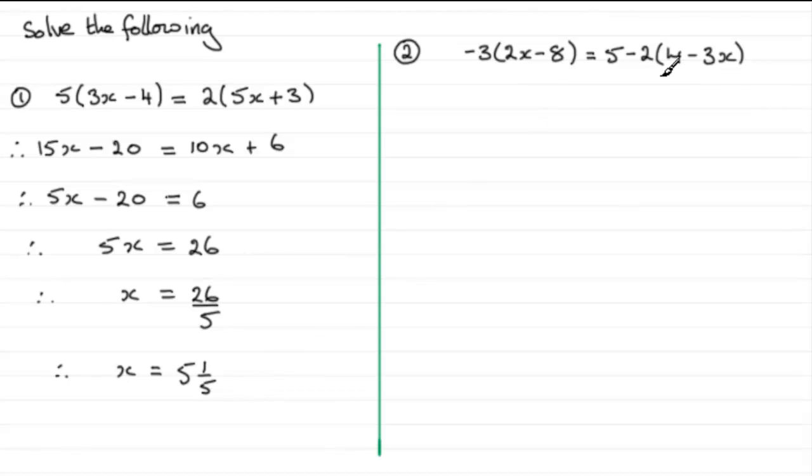Now in number two we've got to take care with this type as I pointed out in my previous tutorial. We've got in fact three terms here. We've got this term as the first term equals 5 as another term minus 2 times this bracket okay.